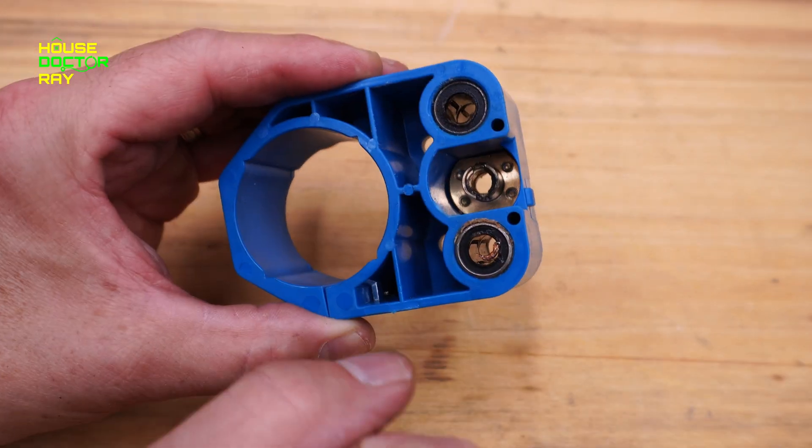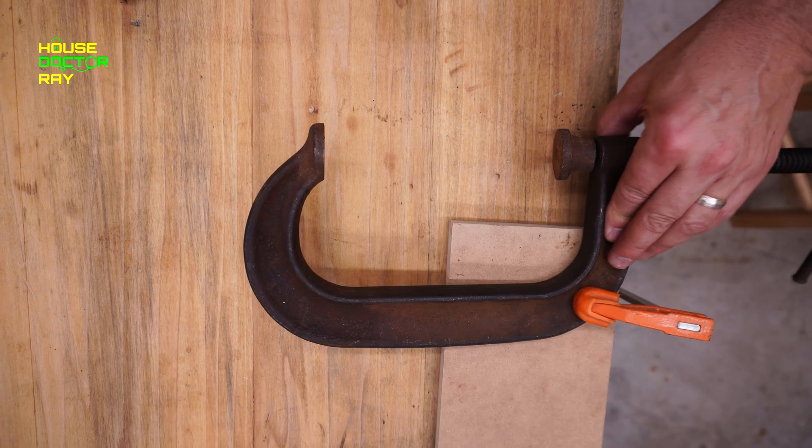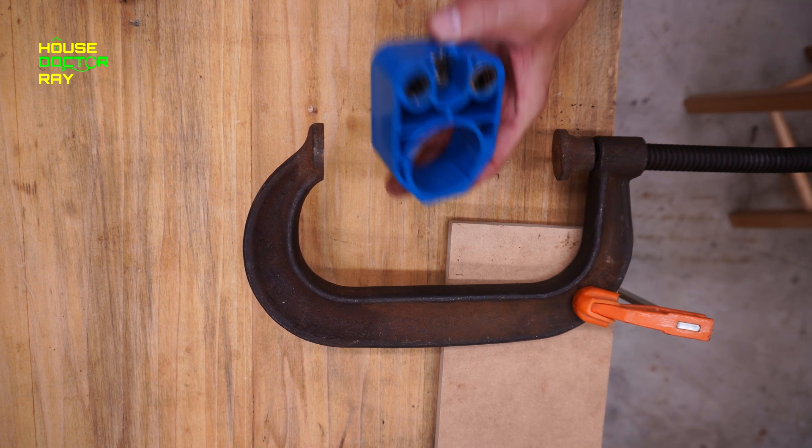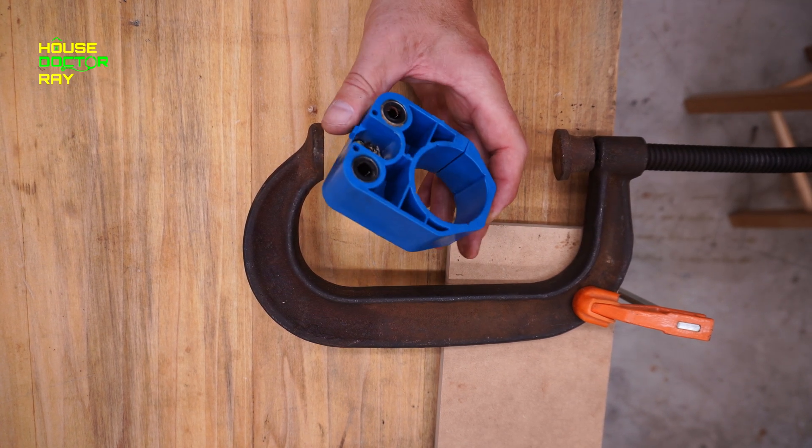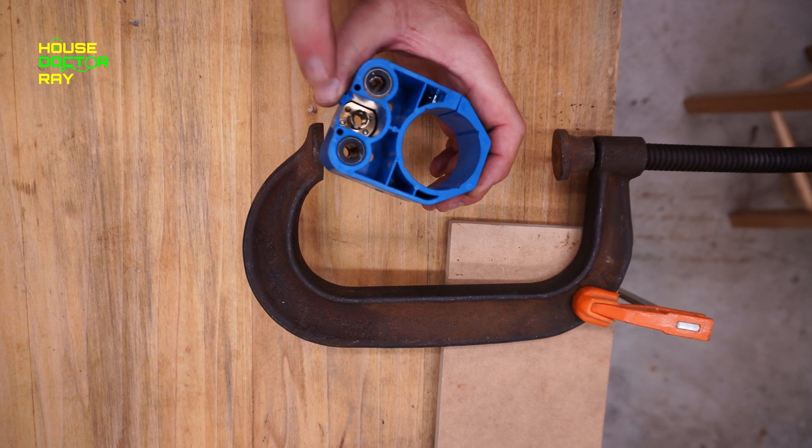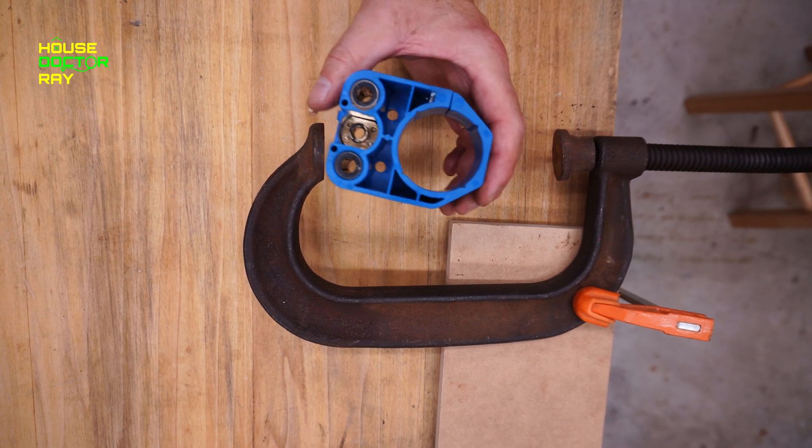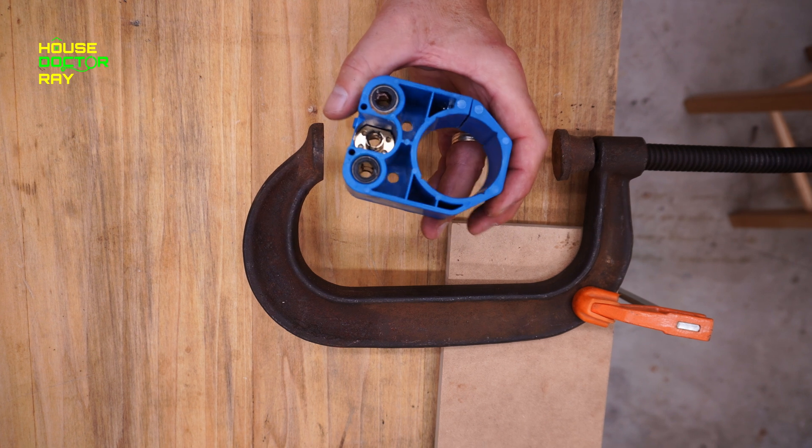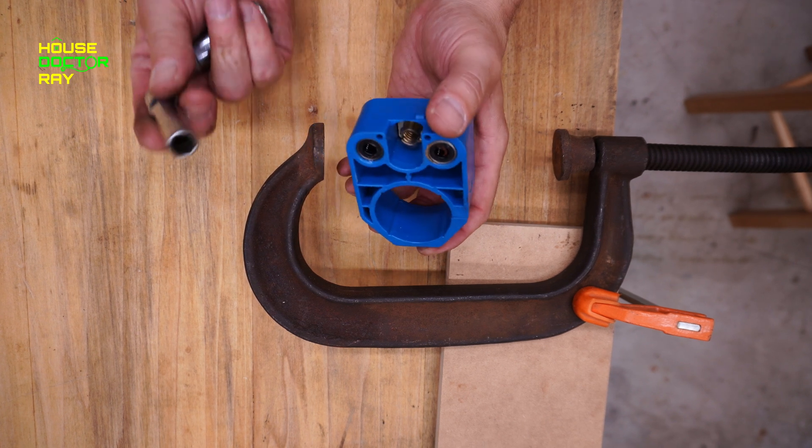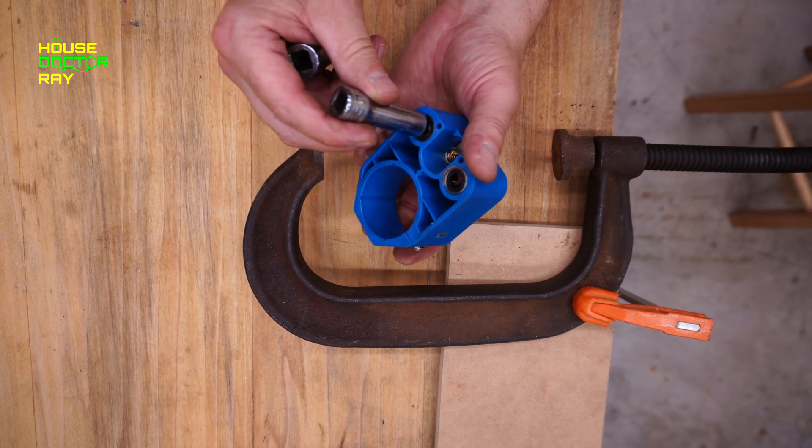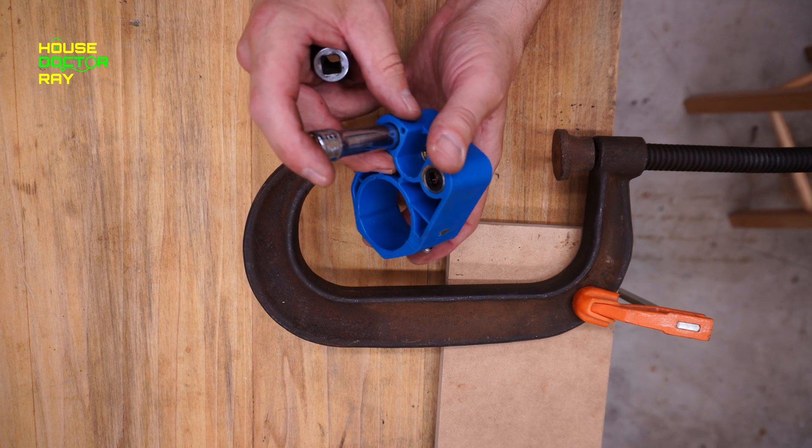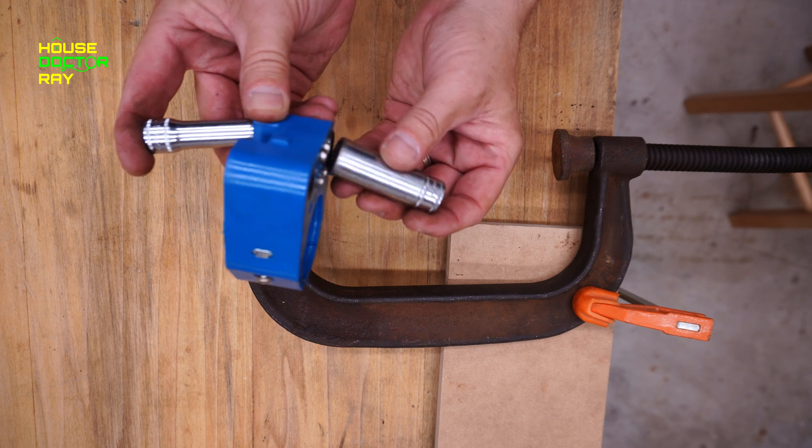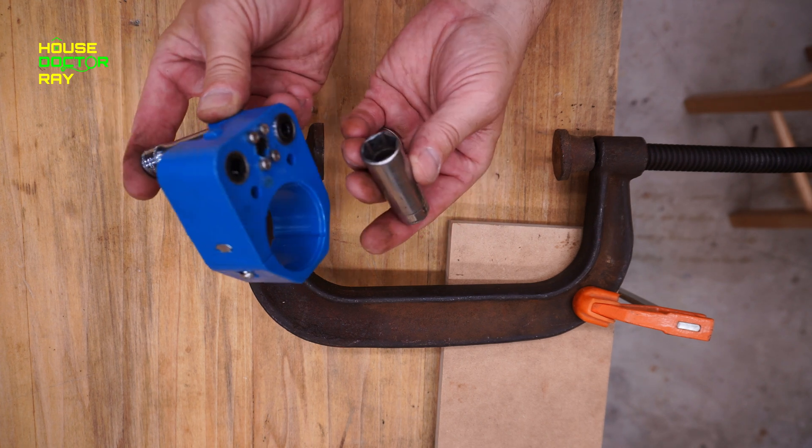So first step is to get these bearings out. So I just took this big old C-clamp that I have and I'm going to use that to press the bearings out. Since this is plastic and these bearings are loose already, you could probably just tap them out with a hammer, but it's never really a good idea to take a hammer to bearings. So I found that a 10 millimeter socket is the right size as the pusher and 15 millimeter socket should give me the clearance to push it out. Going with 17 just to be on the safe side.